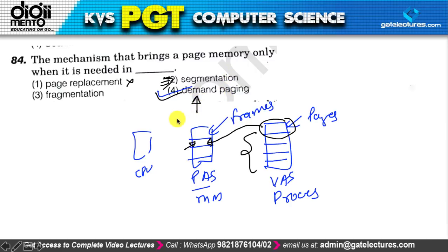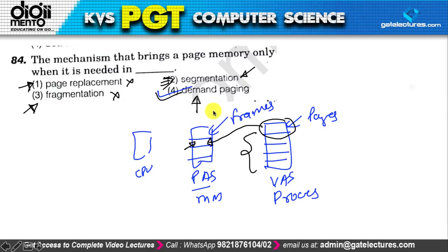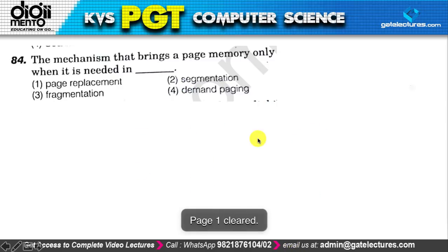The correct answer is demand paging. Fragmentation is not the answer here. Page replacement algorithms, internal fragmentation, external fragmentation, segmentation, and segmentation with paging are all covered in the operating system memory management videos. Demand paging has also been covered in complete detail there. So the correct answer is demand paging.